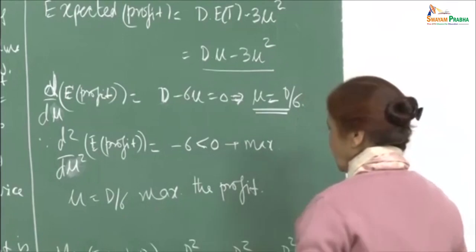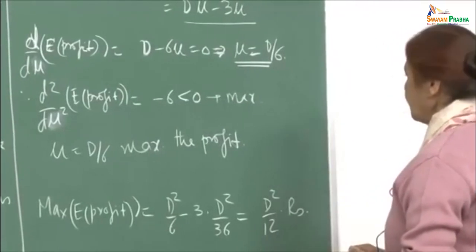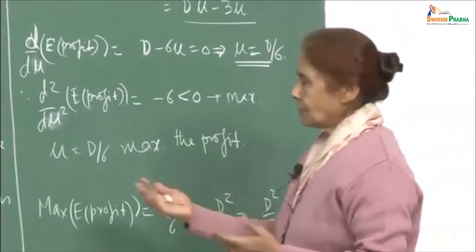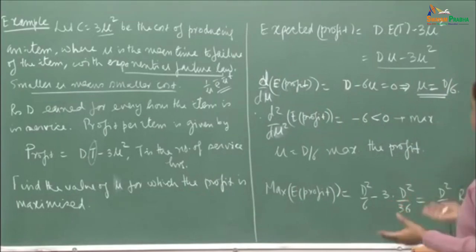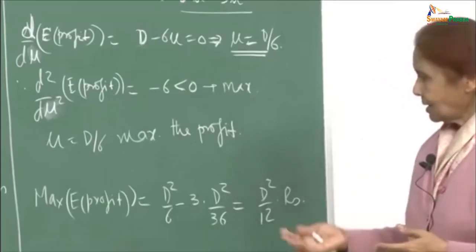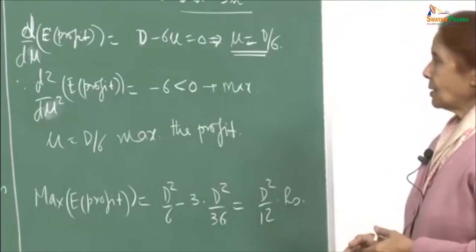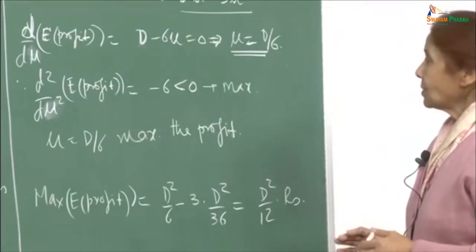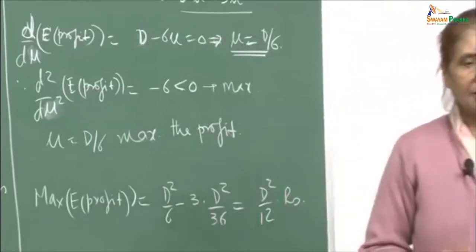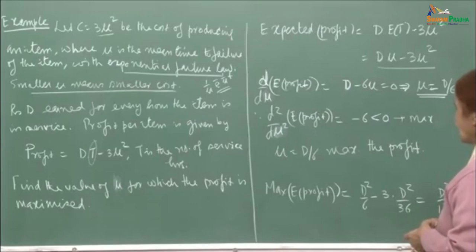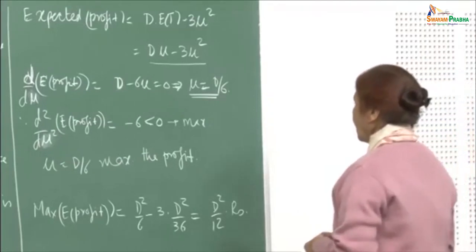So mu equal to d over 6 maximizes the expected profit, and the maximum profit is d squared over 12 rupees. This is just to give you a feeling for the exponential failure law and the kind of problems that arise. The level I have kept is very basic — it is trying to give you a glimpse of how probability tools we have learnt can be used for answering so many questions about day-to-day operations of systems and service systems.